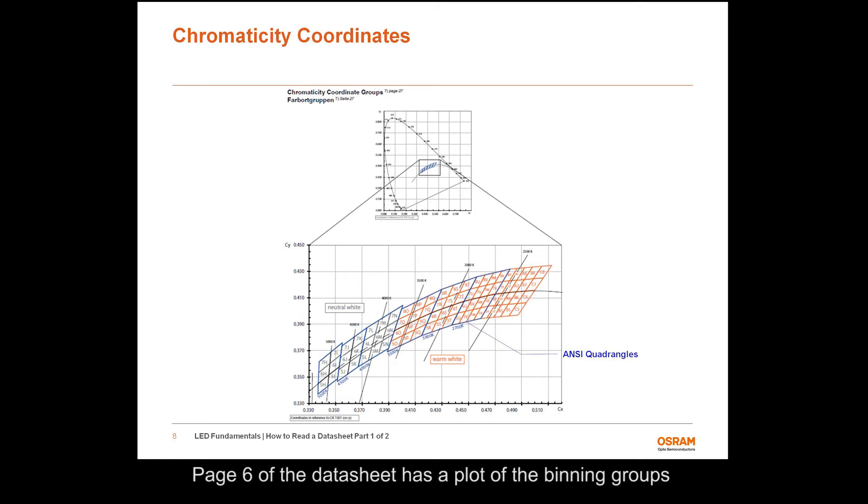Page 6 of the datasheet has a plot of the binning groups linked to the part numbers listed on page 2 of the datasheet on the CIE 1931 chart. For Osram Opto Semiconductor's white LEDs, such as this one, the color binning is based on the ANSI standard quadrangles for color temperature. In addition, any one color bin will fit within a three-step MacAdams ellipse. This binning strategy is known as fine white binning. The fine white binning approach allows Osram to address any specific color requirements the user may have.